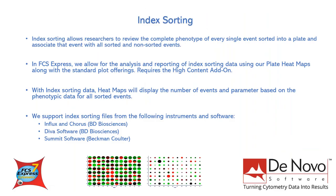Before we dive into our data analysis, let's first talk about what index sorting is and how we are using it. Index sorting allows researchers to review the complete phenotype of every single event sorted into a plate and associate that event with all sorted and non-sorted events. In FCS Express, we allow for the analysis and reporting of index sorting data using our plate heat maps along with the standard plot offerings.